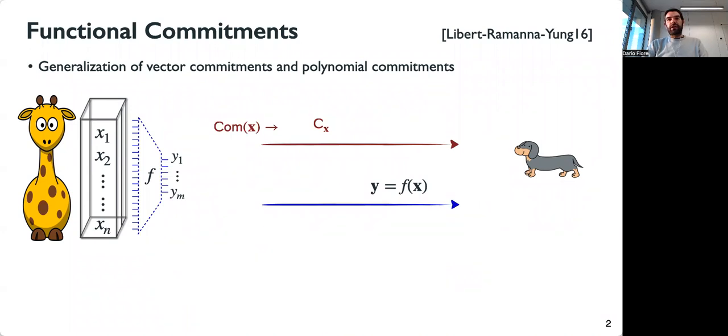The sender gives the result to the receiver, but also gives some opening proofs. The opening proof should convince the receiver that the result Y is actually obtained by what opens the commitment.